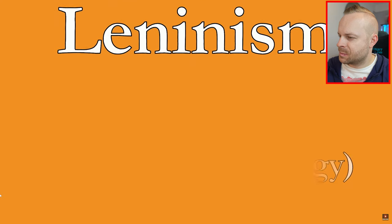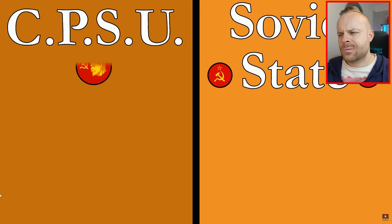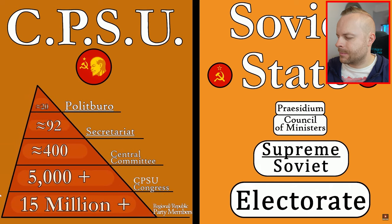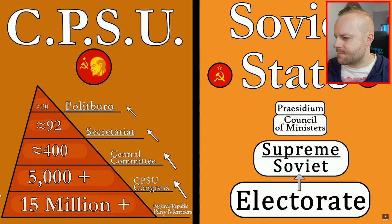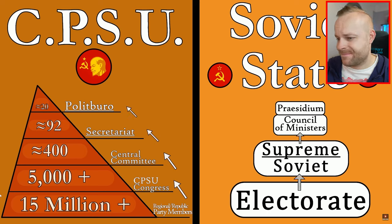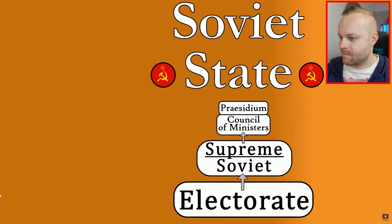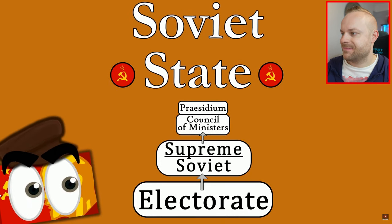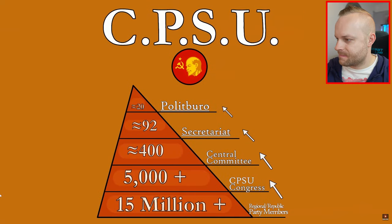The two parallel institutions — the government and the Communist Party — were organized into pyramid hierarchies. In theory, they were meant to be run from the bottom up, with the lower bodies allocating power to the higher ones, but in practice, the official government was subservient to the party, and power in the Communist Party flowed from the top down.